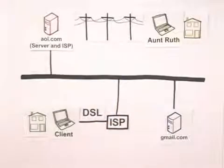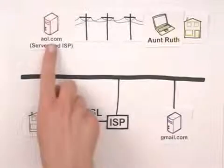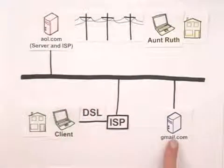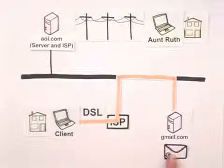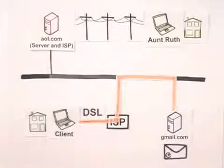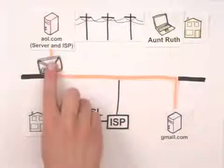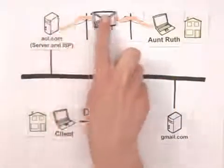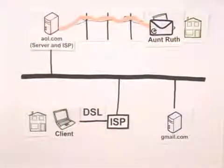Now let's say that I want to send an email to Aunt Ruth. Aunt Ruth has AOL dial-up from home and I've got a Gmail account. I log on to Gmail.com and compose a message to Aunt Ruth's email address, auntruth@AOL.com. Once I click send, Gmail.com sends the email to AOL.com. The next day, Aunt Ruth dials into AOL's servers and retrieves the email.